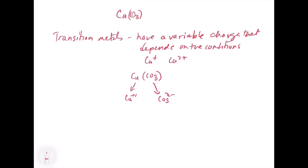There's another technique: set up an equation where the charge of the copper plus the charge of the carbonate equals zero. You know the carbonate is −2 and the whole thing must equal zero. So you have 2x + (−2) = 0, where x is the charge on each copper. Add 2 to both sides: 2x = 2, divide by 2, and x = +1. This method should work for anything.